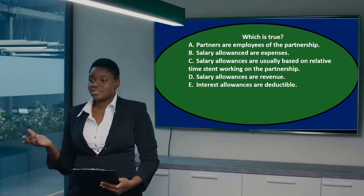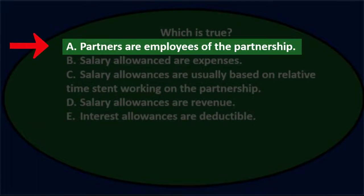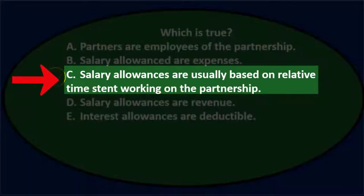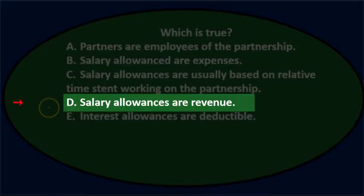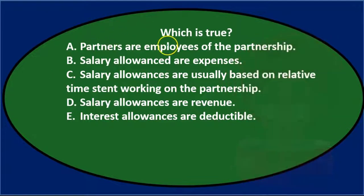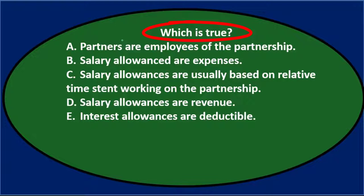In this presentation we will take a look at multiple choice questions related to partnerships. First question: which is true? A) partners are employees of the partnership, B) salary allowances are expenses, C) salary allowances are usually based on relative time spent working on the partnership, D) salary allowances are revenue, and E) interest allowances are deductible. Let's go through these using process of elimination.